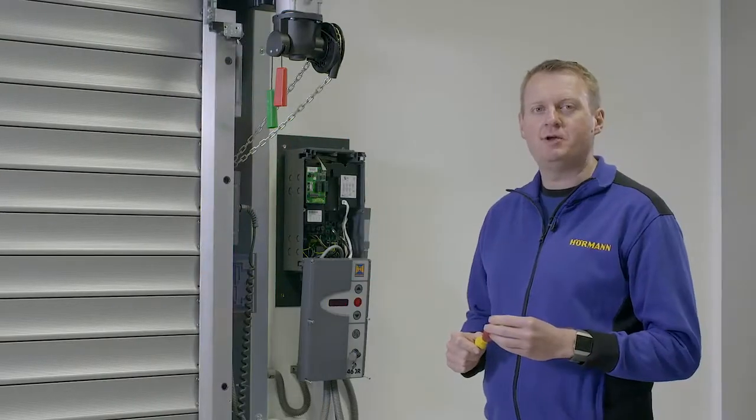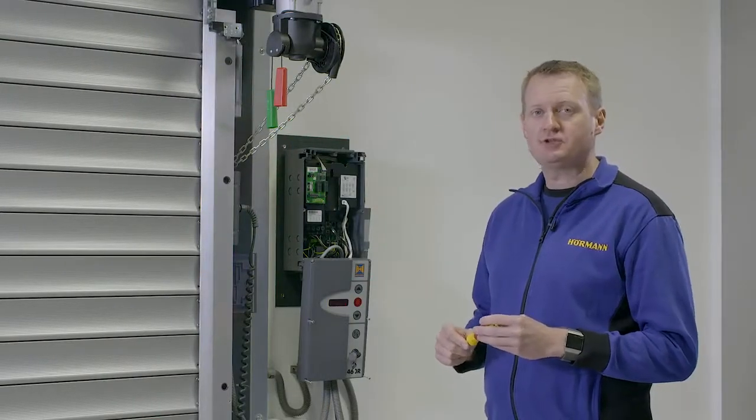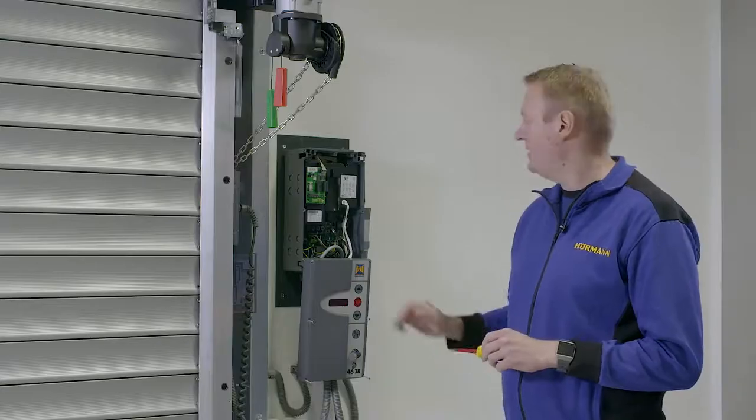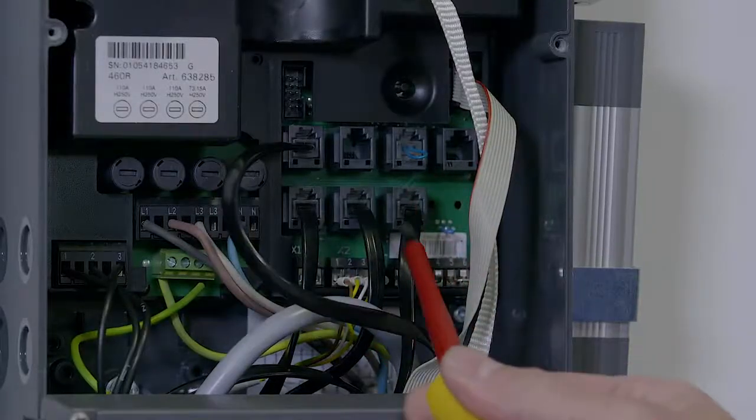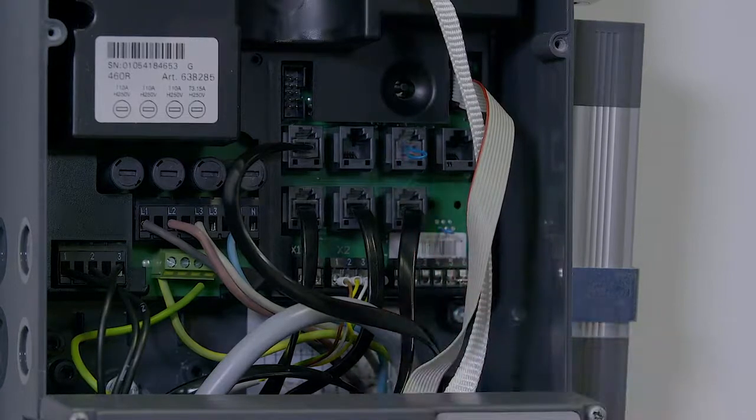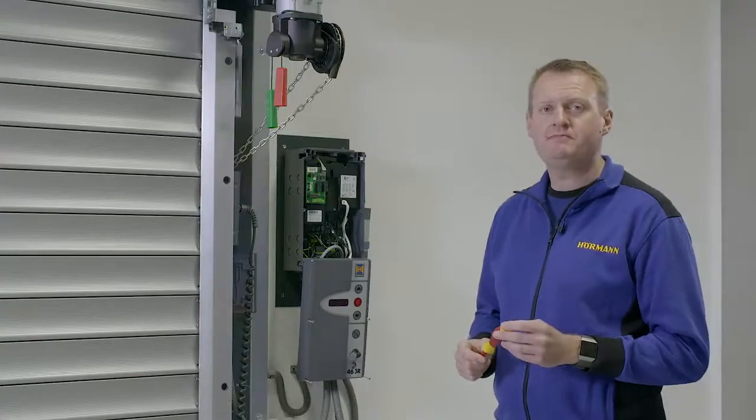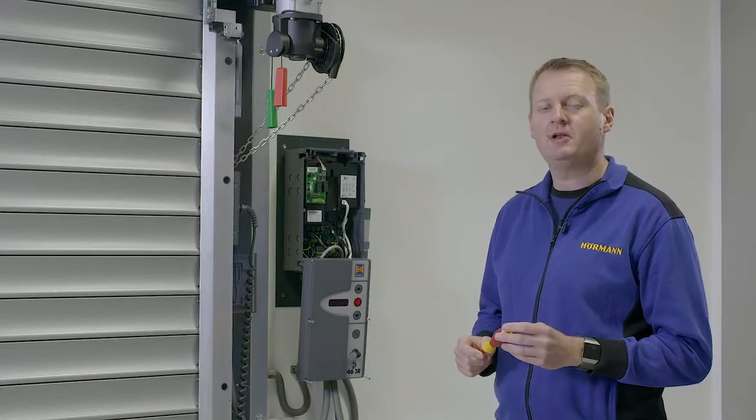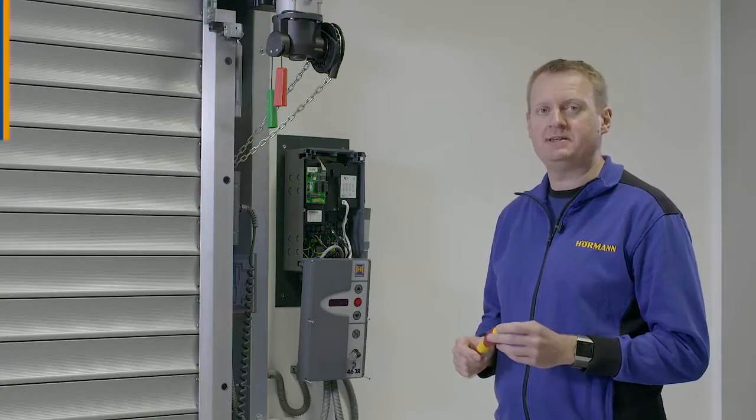A common fault code is 01. This is a 24 volt stop circuit wired into either terminal x1, x3, or plugged into x10. This could be either an emergency stop button, an interlock from another system like an airlock, or an anti-fall device if fitted.